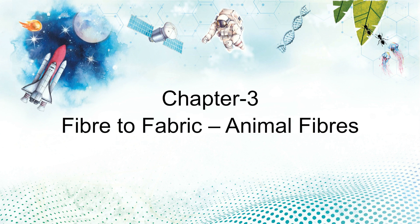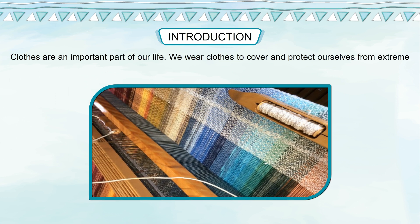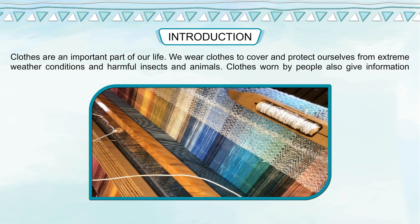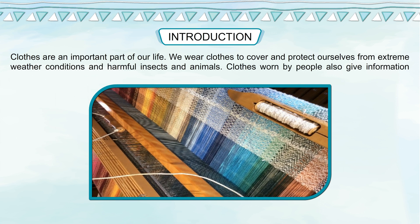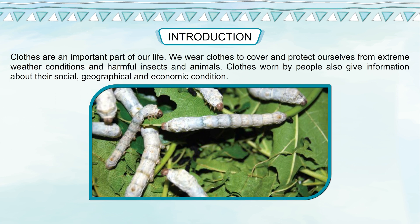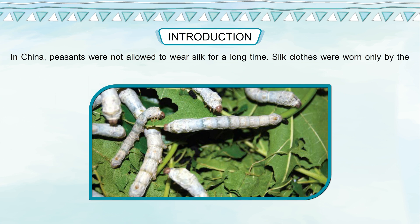Chapter 3: Fiber to Fabric – Animal Fibers. Clothes are an important part of our life. We wear clothes to cover and protect ourselves from extreme weather conditions and harmful insects and animals. Clothes also give information about a person's social, geographical and economic condition. In China, peasants were not allowed to wear silk for a long time; silk clothes were worn only by the elite people of the society.